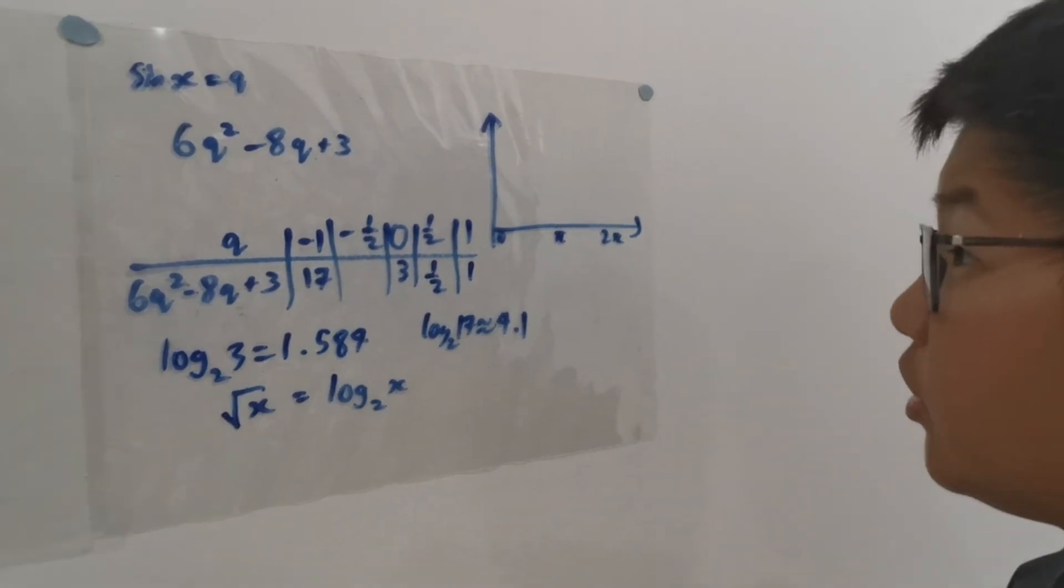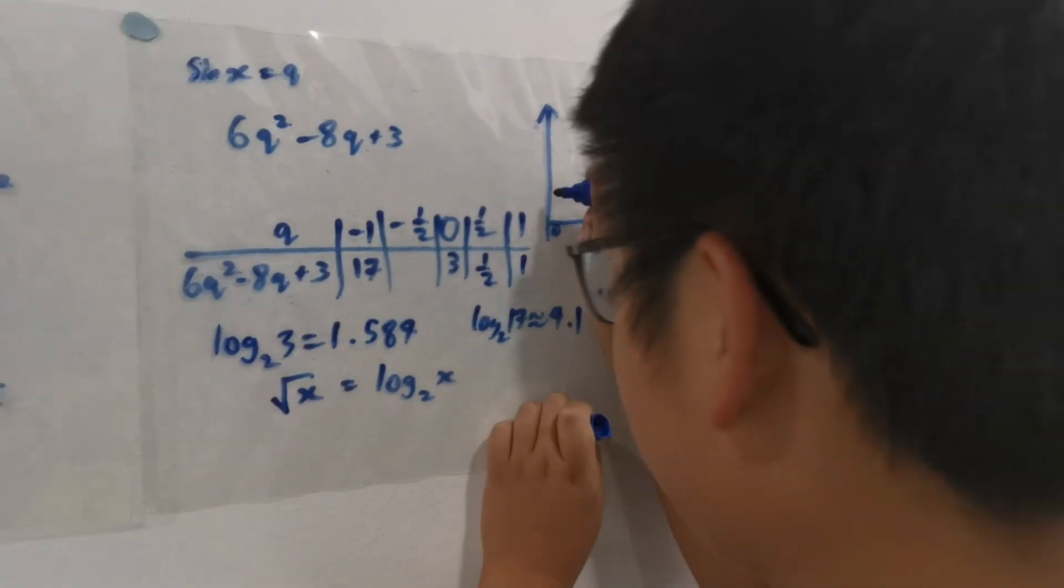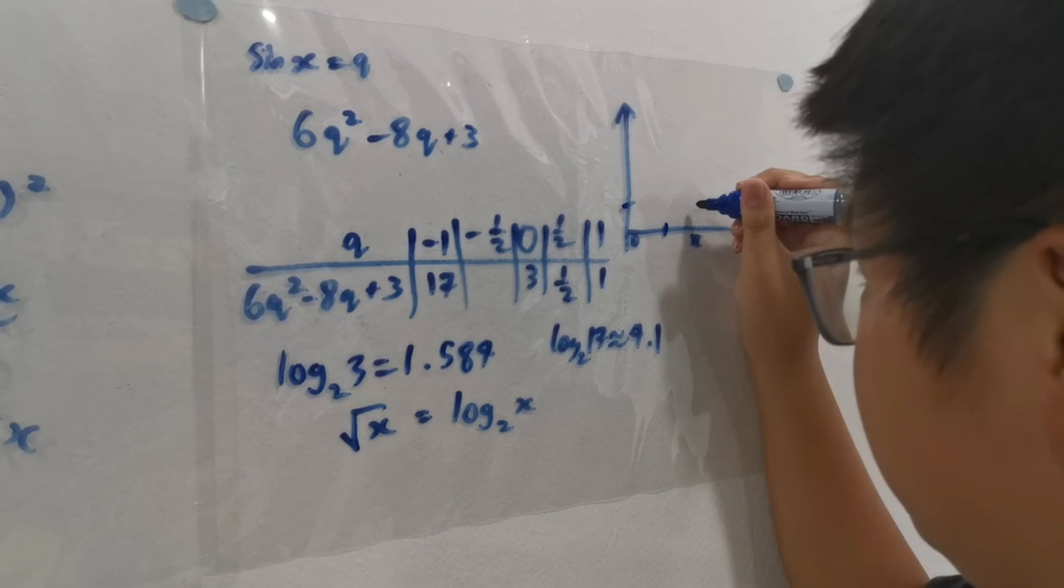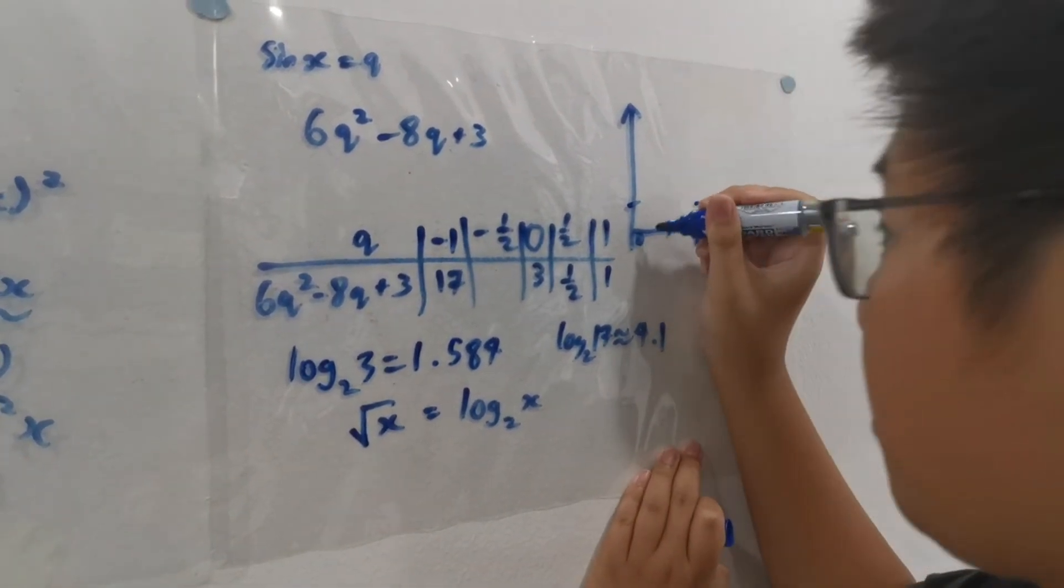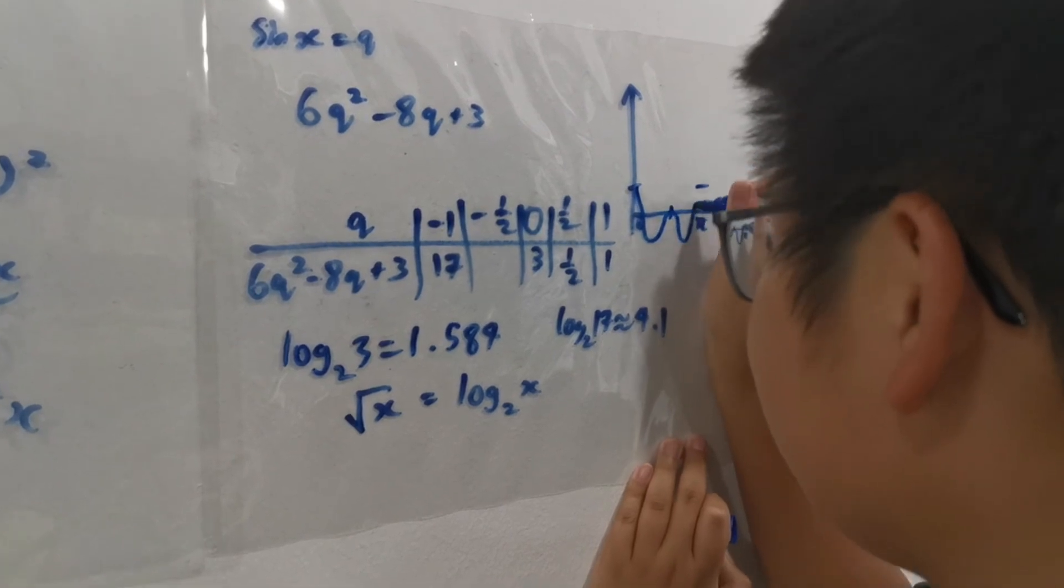Since we know the shape of the graph, let us do this. It becomes a positive value here, and at 1 it is 0. So it returns back to 3. So it must reach 0 here somewhere. So we'll draw it like this.